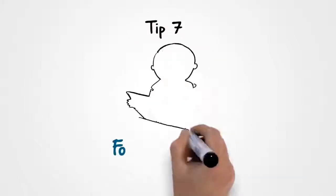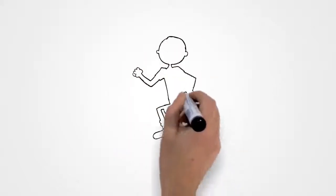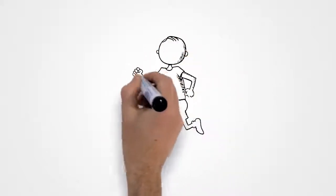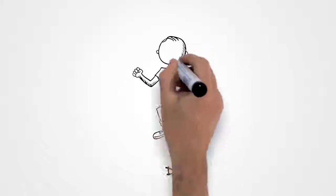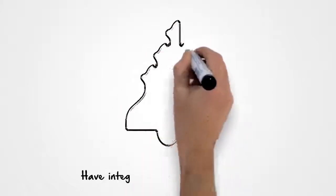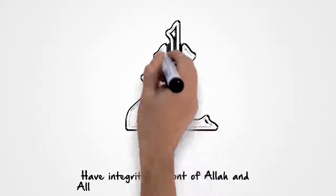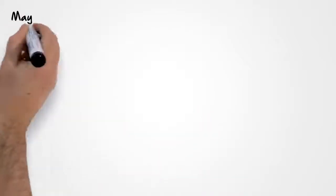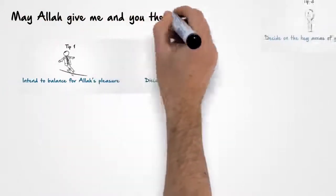Tip 7. Follow through. When it comes to Tuesday morning and you see exercise in your schedule, do it. Don't make excuses for yourself. Have integrity in front of Allah and Allah will put barakah in your actions.